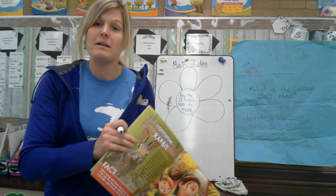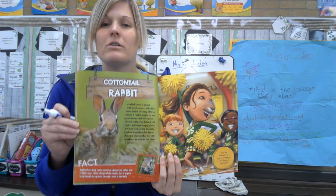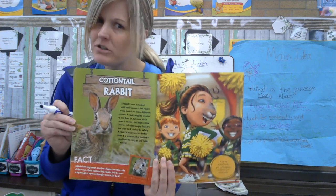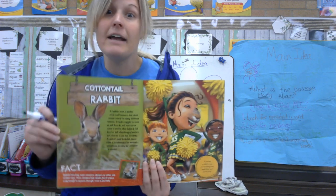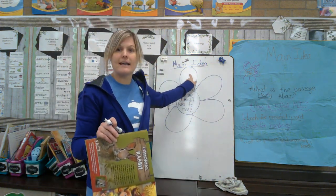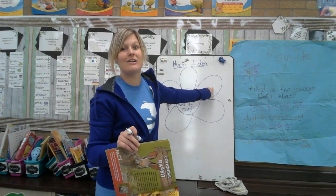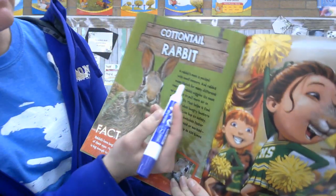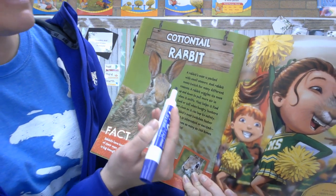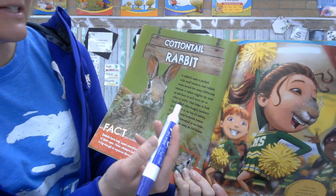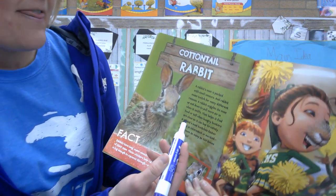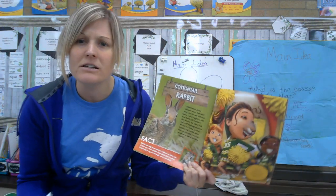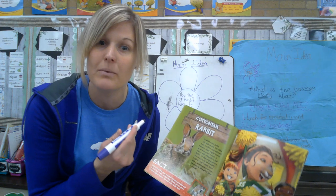Now we have to dive a little deeper into the text. We have to say, okay, if that's what the main idea is, what details prove that to me? How do I know it's about the cottontail rabbit and its nose? I want to look for actual evidence from this text. 'A rabbit's nose is packed with smell sensors and rabbit noses twitch for many different reasons. A rabbit wiggles its nose up and down to pull more air in when it sniffs. That helps it find food or tell when hungry hunters are close so it can hop to safety.' I just heard at least three different things I could write down for how the rabbit uses its nose.